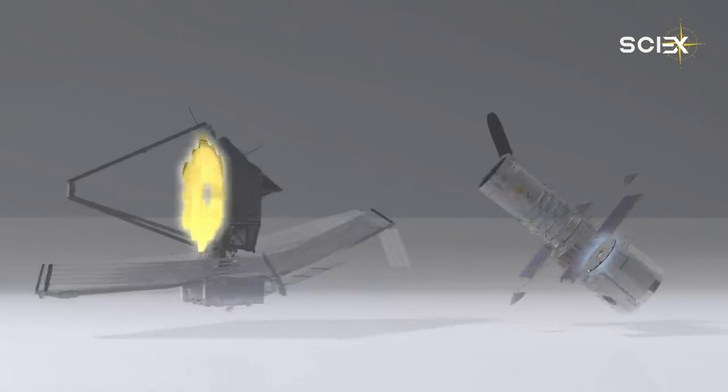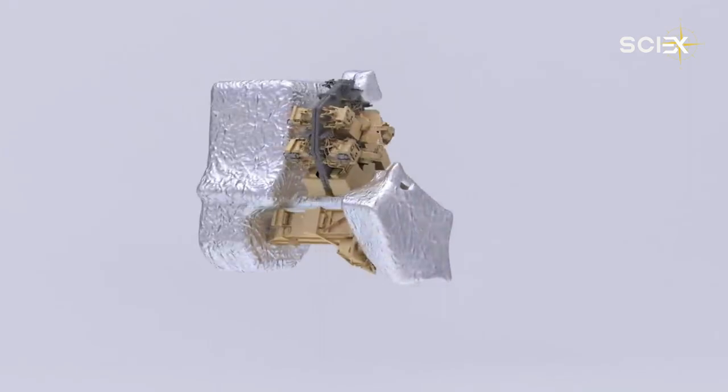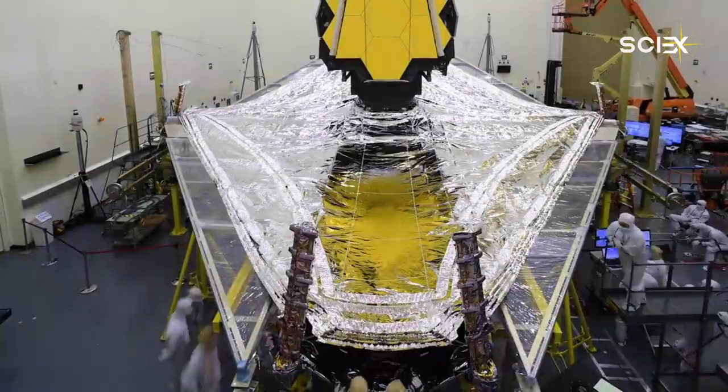The image, taken by Webb's near-infrared camera, is composed of images taken at different wavelengths of light over the course of 12.5 hours. The Hubble Space Telescope's deepest fields took weeks to capture.